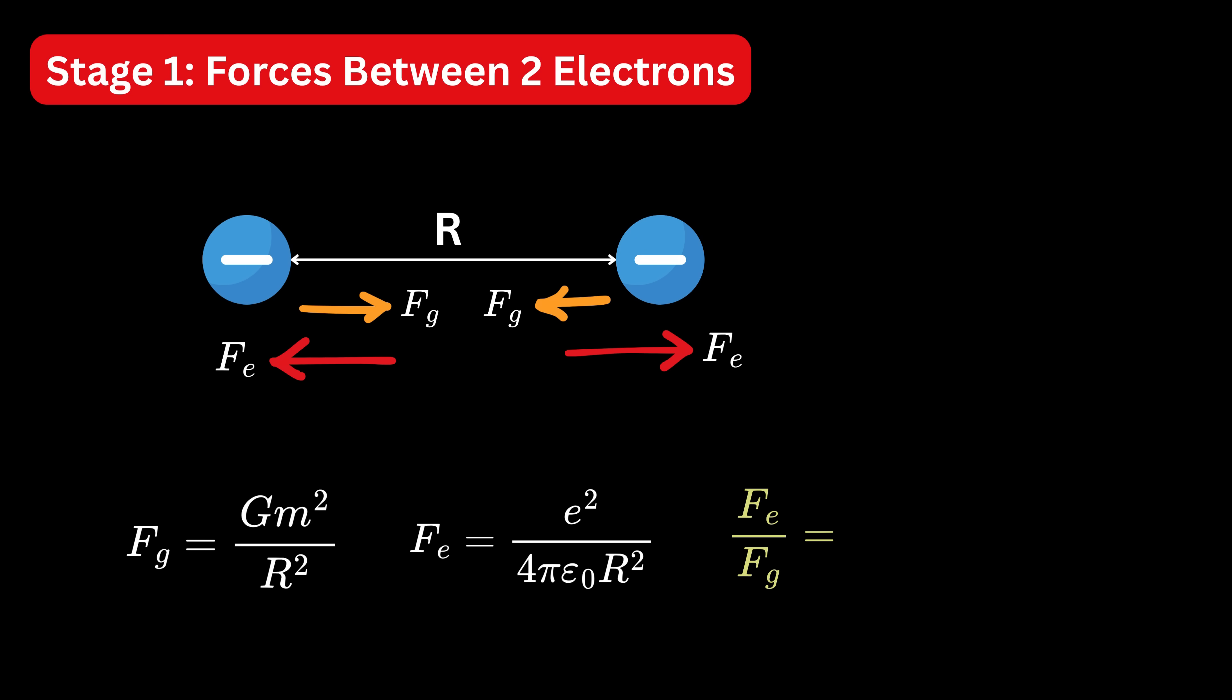If you take the ratio of these two forces, you notice something amazing. The R squared term cancels out. So the comparison between electric and gravitational force doesn't depend on how far apart the electrons are. That ratio turns out to be around 1 followed by 42 zeros. That's 10 raised to 42. So electric repulsion is that much stronger than gravity at the scale of particles.